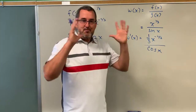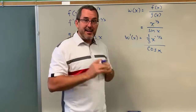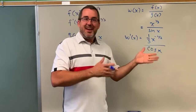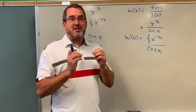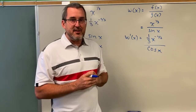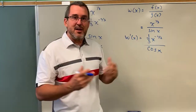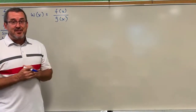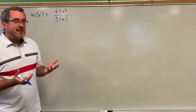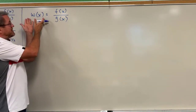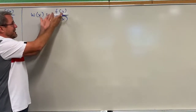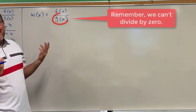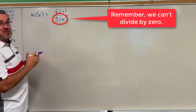Rather than go into a big Desmos explanation like I did in a previous video on the product rule, I'm going to ask you to go check out that video. For this video, we're going to focus on how we take the derivative of a quotient. Let's develop the quotient rule. We're going to explore this idea by thinking about any quotient w of x being a function f of x divided by another function g of x, as long as g of x cannot equal zero.